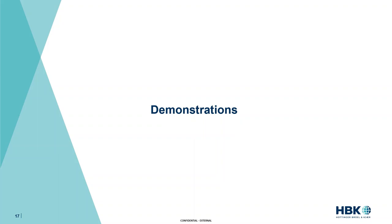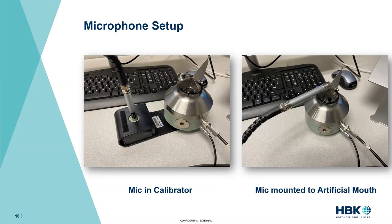Now for the fun stuff — seeing these apps in action. For the demo setup I have one of our microphones, I believe a 4189, first set up in one of our calibrators. After calibrating the mic I moved it over to the Type 4227 artificial mouth, a playback device designed to mimic human voice field and adhering to technical standards on speech playback. We'll go through the process of setting up, calibrating, and producing equalized speech out of the 4227.